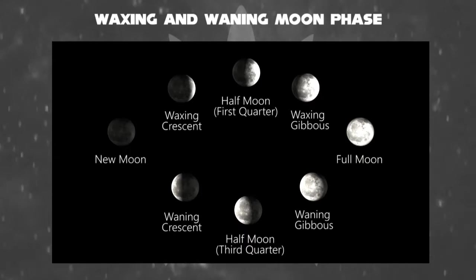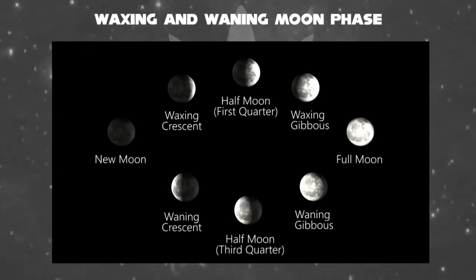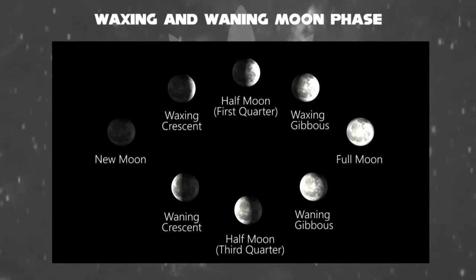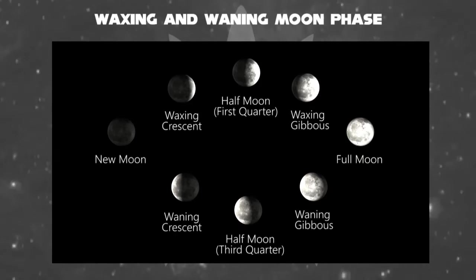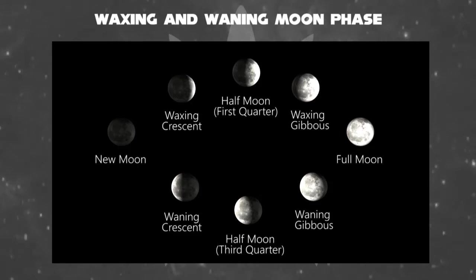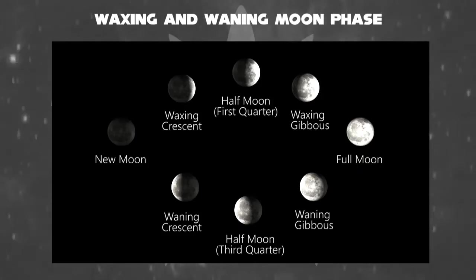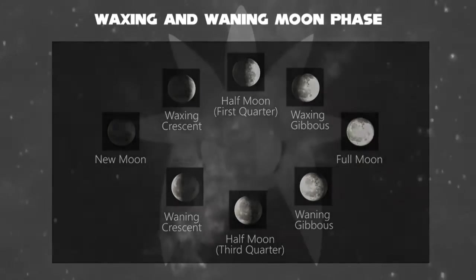You will notice that the moon revolves around the Earth, but you can see the moon which rotates according to the sun's light. There are a total of eight cases: three subdivisions for waxing and three for waning, with the remaining two references — new moon and full moon — remaining the same.